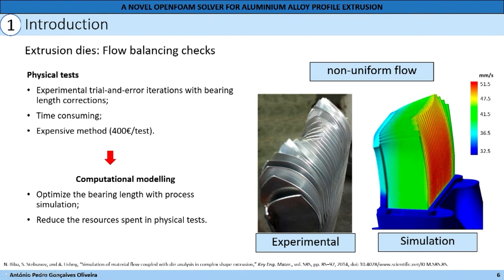Here is an example where it is possible to see the extrusion of a heat sink, in which the upper part of the fins has higher relative velocity than the lower part, which promotes a non-uniform flow. The profile simulation study shown in the right image could have been carried out before the die went into production, correcting the bearing length so the flow was uniform.